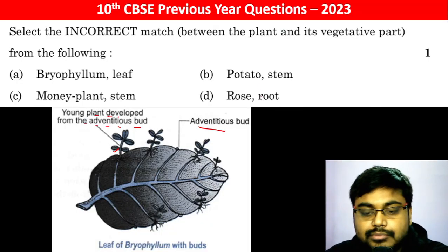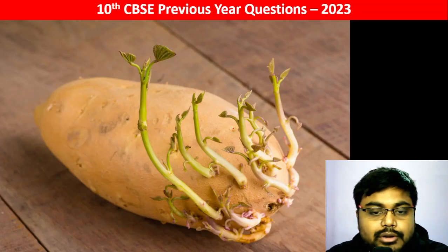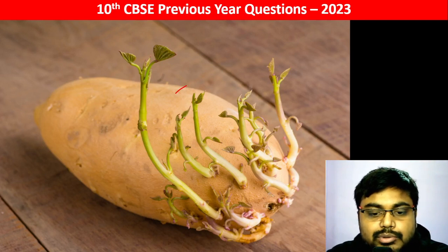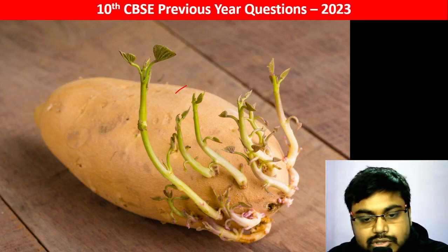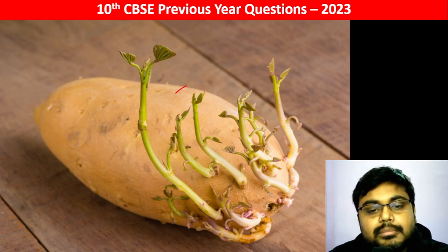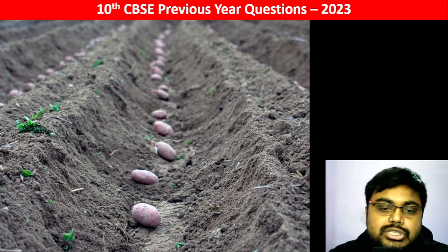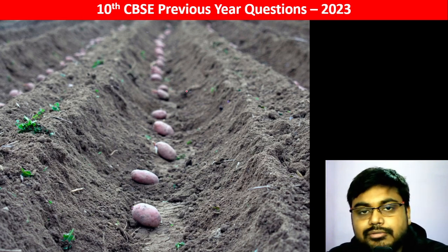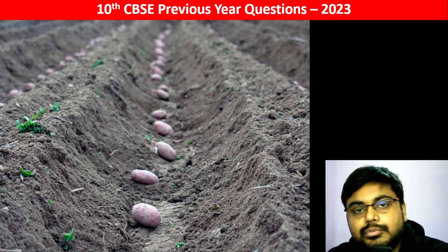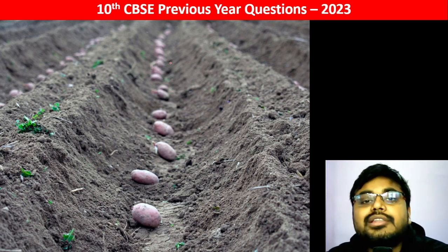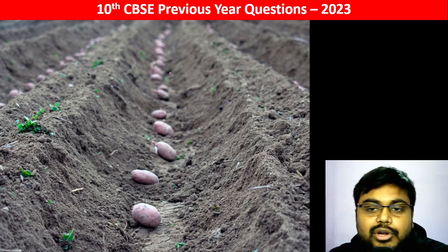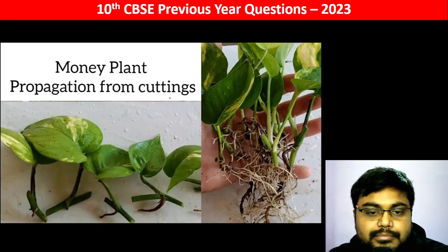Potato is actually a stem - it is a stem tuber. The plant grows from the potato itself. In fact, when farming potatoes, potatoes are placed in the ground and potato plants come up.